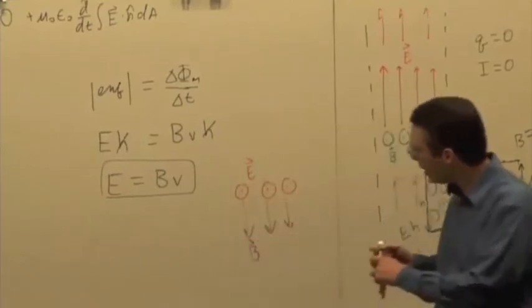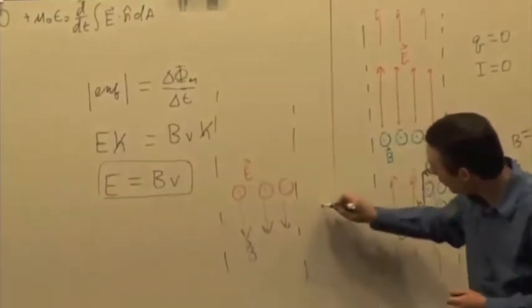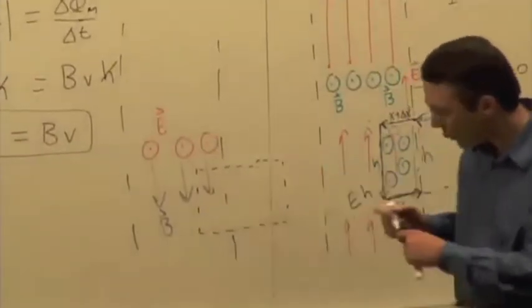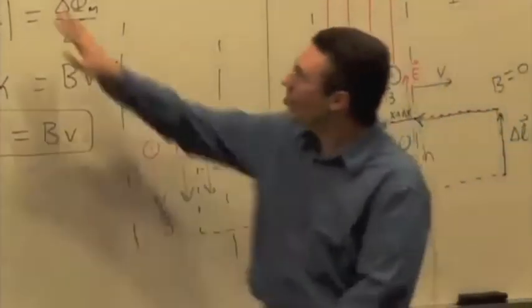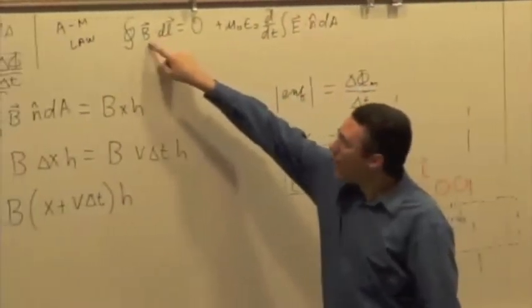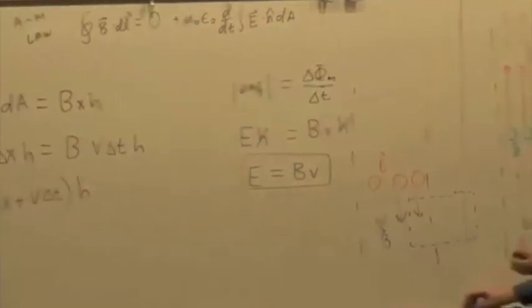then I can go through the exact same reasoning. Here's our slab again. I can go through the exact same reasoning using a loop oriented like that. So now I'm looking at the electric flux on this side and how it's changing, how it's related to the path integral of the magnetic field around the loop. Just by analogy,